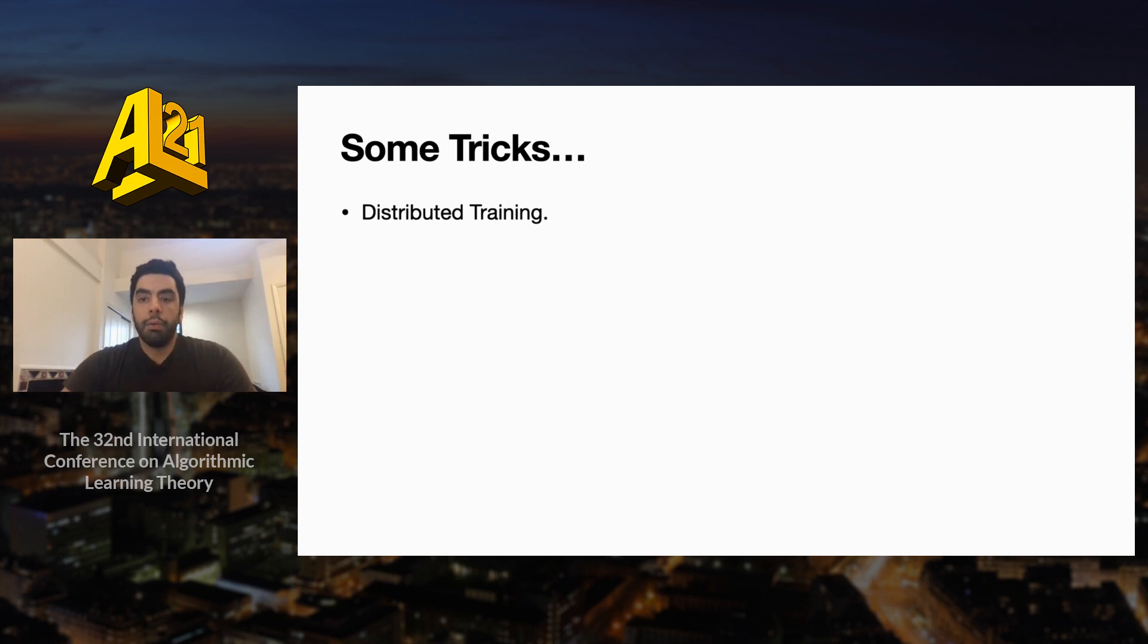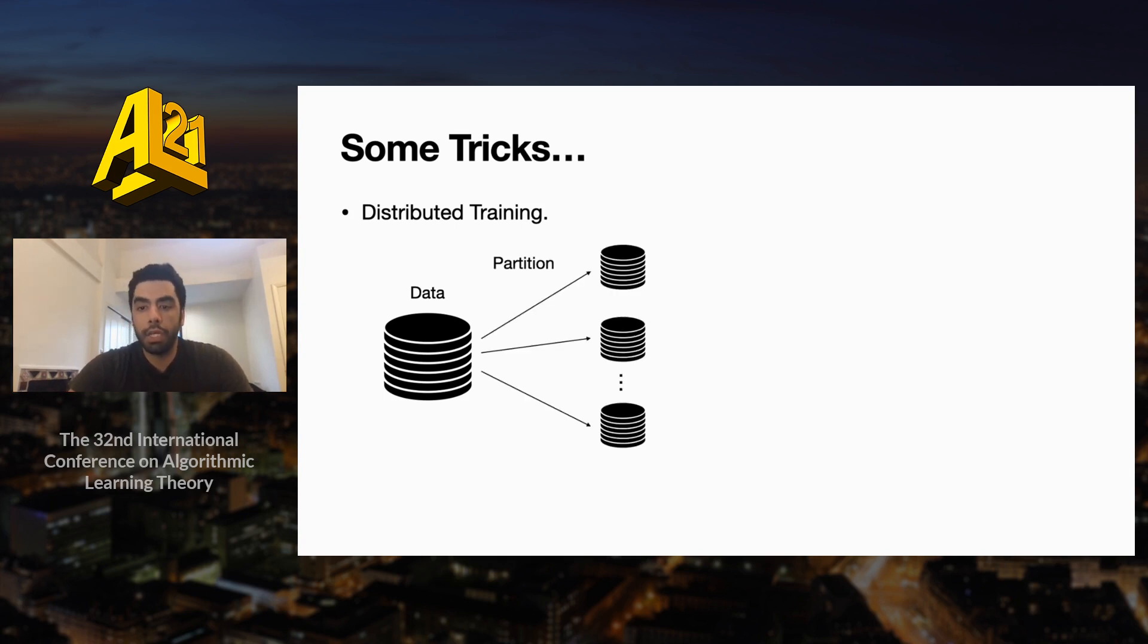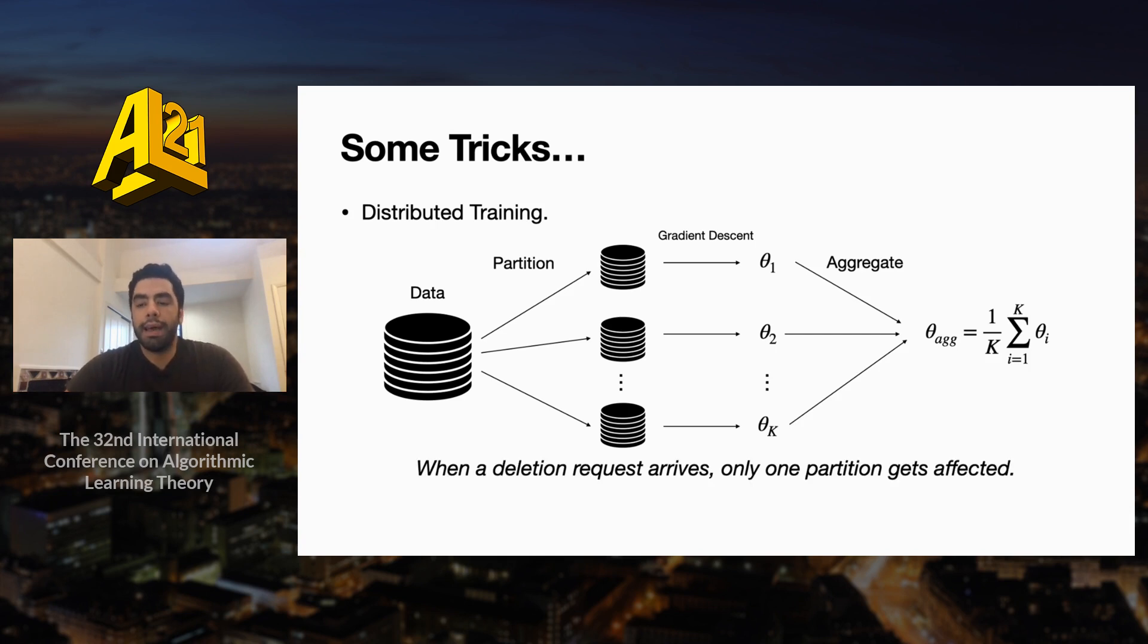The second idea we can use to get fast deletion algorithms is distributed training. Imagine the training procedure goes by first partitioning the data set into K chunks, and then running gradient descent on each chunk separately, and finally aggregating those K models. The observation here is that after we've done distributed training, when a deletion request arrives, only one of the partitions gets affected, and so we only need to update the model corresponding to that partition.